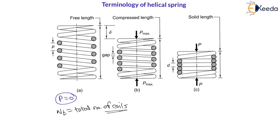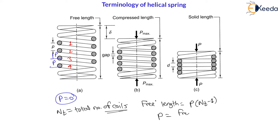To calculate this pitch or to calculate free length in terms of pitch: if I consider four coils — number one, two, three, four — between these four coils I can get three pitches. Therefore, one coil is excess for pitch. So free length equals pitch into (total number of coils minus one), because one coil is excess. From this, pitch equals free length divided by (total number of coils minus one). This is how we calculate pitch.